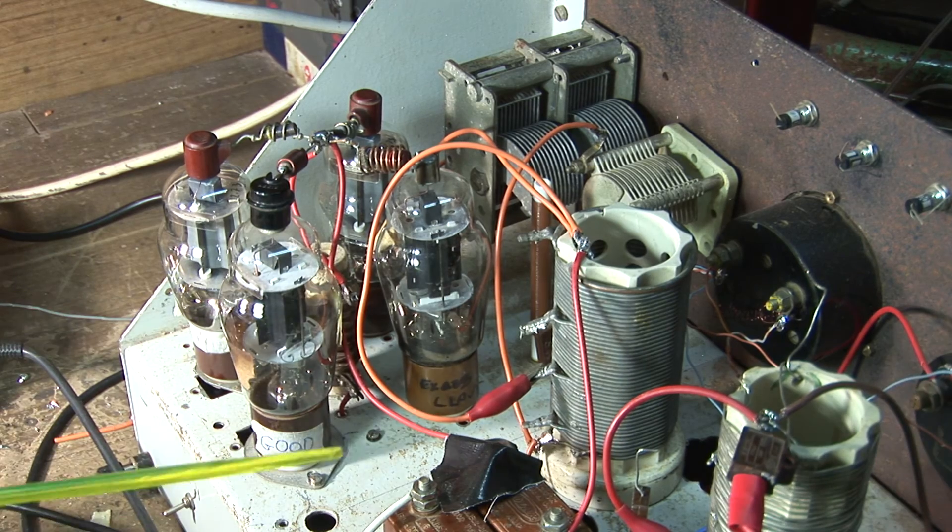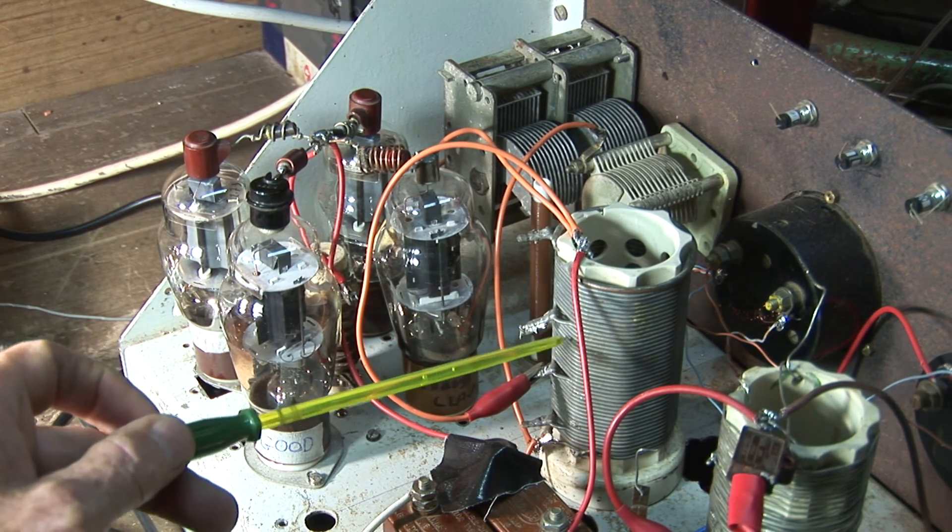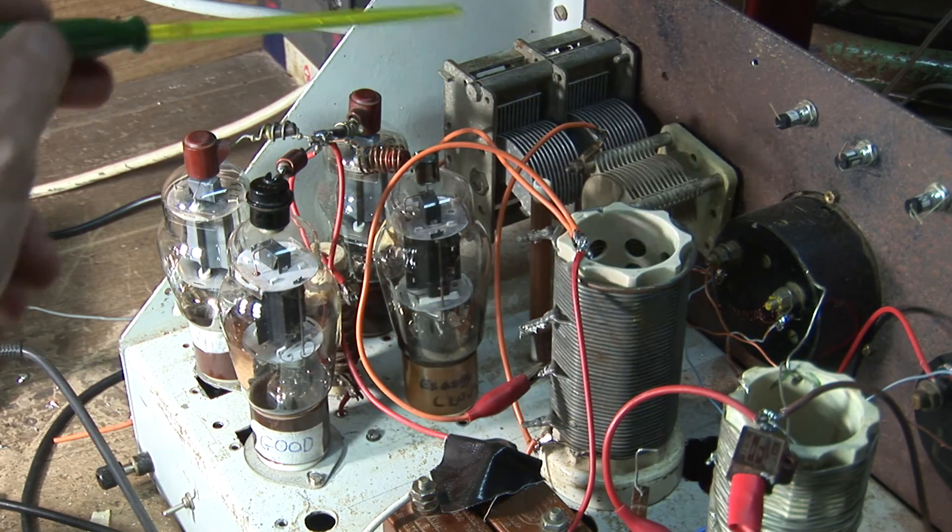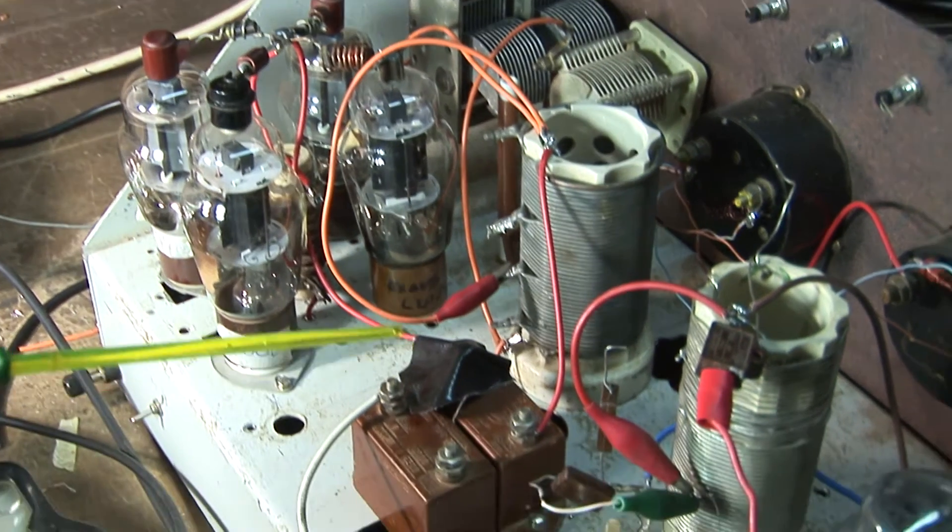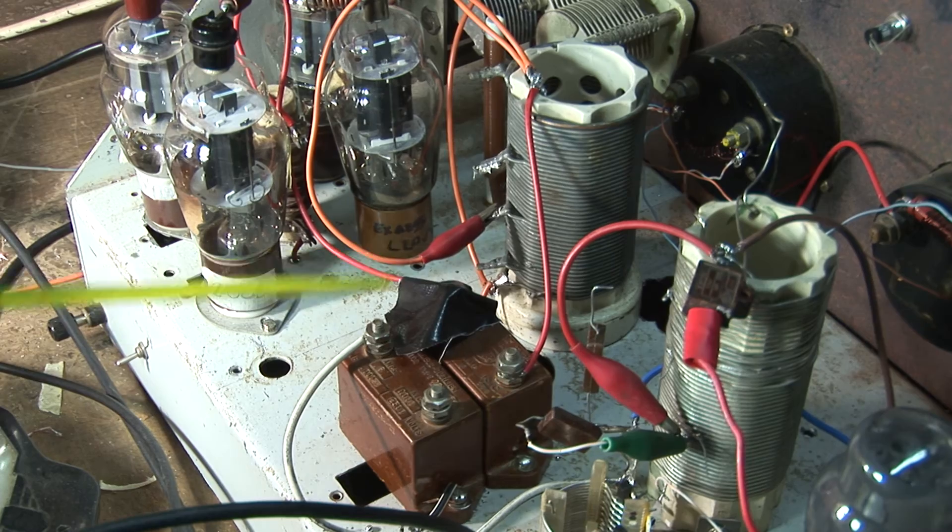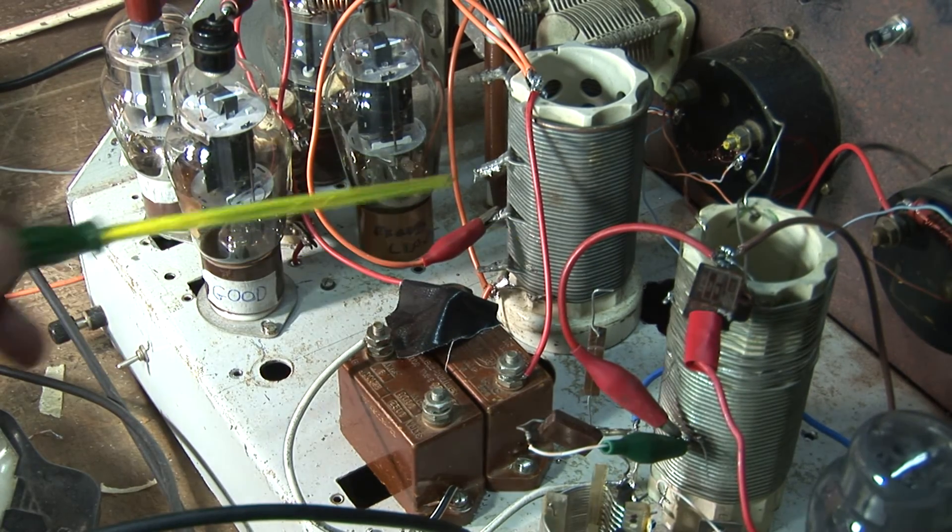RF choke in the middle. The tank coil for the PI circuit, PI output coupling circuit. The capacitors are there. There's the isolating capacitors so the DC doesn't get into the coils.